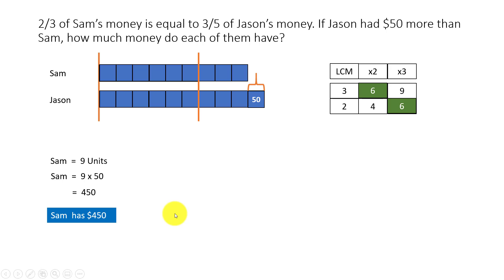Similarly, let's go to Jason. Jason has 10 units here, and each of the unit is 50 as we know already. So totally 500, and Jason has $500. This is quite a simple problem once we break down the initial first statement and draw models for them. The rest is quite simple. I hope this was useful.